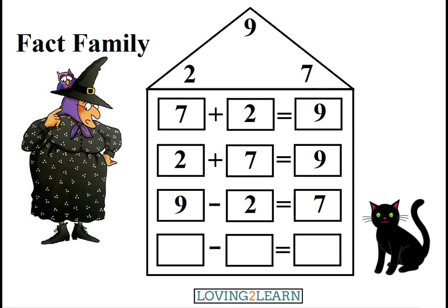Let's start with 9 again, Mildred says. 9 minus 7 equals what? 2! Excellent! We count backwards and take 9 and count backwards by 7: 9, 8, 7, 6, 5, 4, 3, 2. Or, we know 9 minus 7 equals 2. We have completed another fact family!